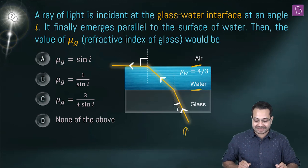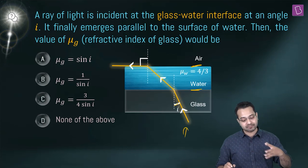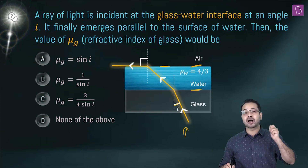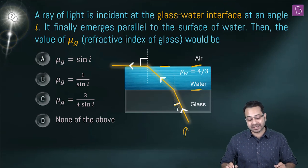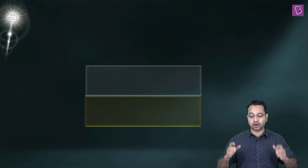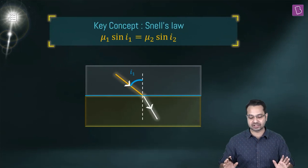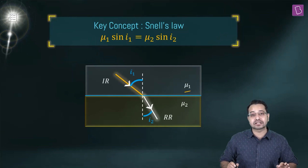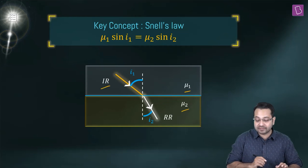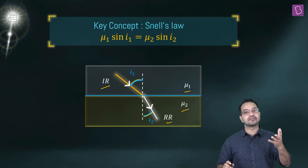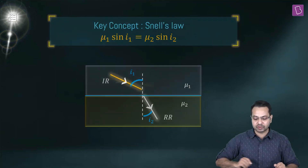A ray of light is incident at the glass-water boundary at an angle i. It will get refracted, and once refracted it would be incident on the air-water boundary. It will again get refracted, and we see that when it gets refracted there, it emerges parallel to the surface of the water. The key concept involved here is Snell's law: μ₁ sin i₁ = μ₂ sin i₂, where μ₁ and μ₂ are the refractive indices and i₁, i₂ are the angles of incidence and refraction.